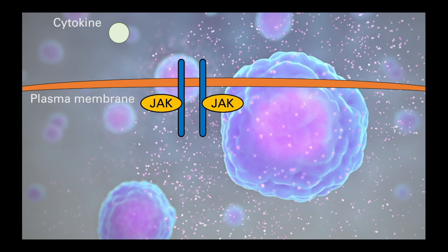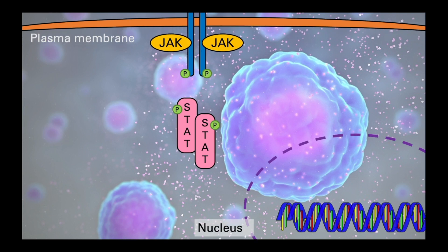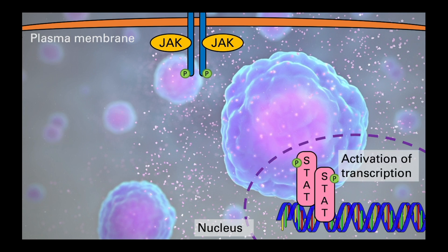When a cytokine binds to its receptor, it causes dimerization or sometimes trimerization of that receptor, which activates JAK — Janus kinase — to phosphorylate the receptor. This recruits the protein signal transducers and activators of transcription, or STAT, and activates it through further phosphorylation, resulting in the release of a phosphorylated STAT dimer. This can translocate to the nucleus and drives gene transcription, and this is a central pathway for the production of many cytokines.